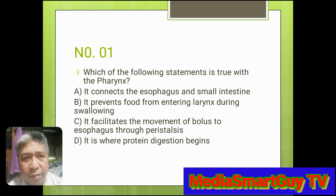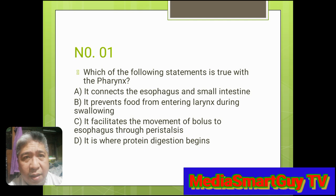Number 1. Which of the following statements is true with the pharynx? A. It connects the esophagus and small intestine. B. It prevents food from entering the larynx during swallowing. C. It facilitates the movement of bolus to the esophagus through peristalsis. D. It is where protein digestion begins. Answer: C. It facilitates the movement of bolus to the esophagus through peristalsis.